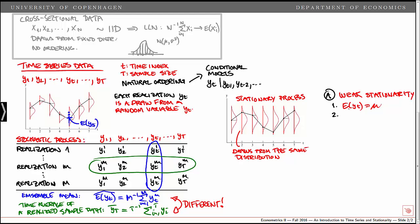Second, the variance, the unconditional variance of Yt is also constant. We can denote that gamma zero. Again, if you look at the red distributions here, you see that they have the same variance at all points in time.